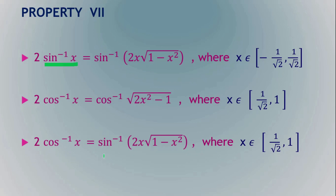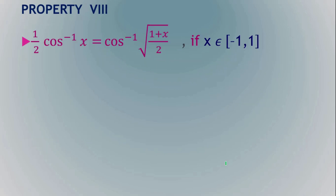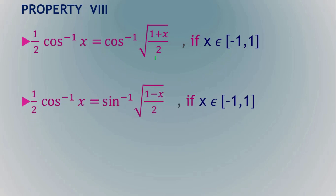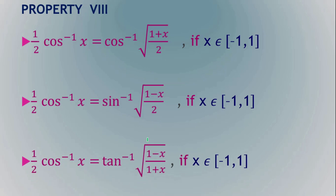For 2·cos⁻¹(x) in terms of sin, it is sin⁻¹(2x·√(1 − x²)). The next property: half of cos⁻¹(x) = cos⁻¹(√((1 + x)/2)). In terms of sin, it is sin⁻¹(√((1 − x)/2)), and in terms of tan it is tan⁻¹(√((1 − x)/(1 + x))). All these properties are to be used to solve problems related to inverse trigonometric functions.